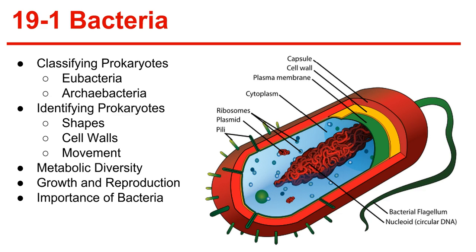Classifying prokaryotes. Prokaryotes are divided into two different groups: the eubacteria and the archaebacteria. The eubacteria is the larger of the prokaryotic kingdoms, and the variety is so great that biologists do not agree on how many phyla are needed to classify this group.